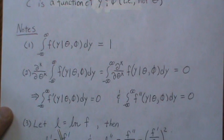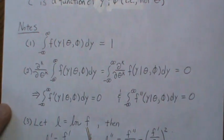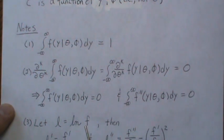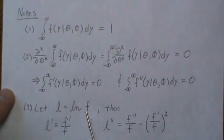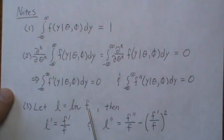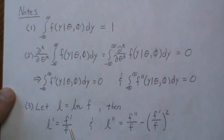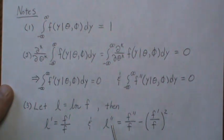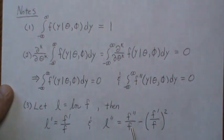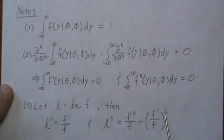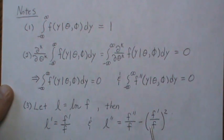Now let L be the log of our density F — the log-likelihood. The first derivative of L with respect to theta is F'/F. The second derivative of the log-likelihood can be shown to be F''/F minus (F'/F)², and notice that F'/F is just L', so we can substitute L' into that expression.